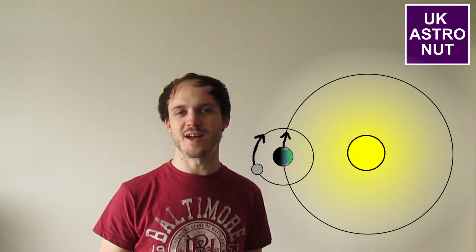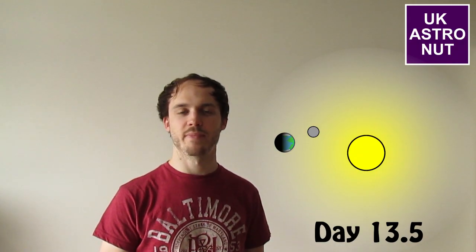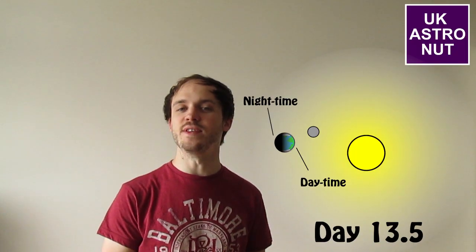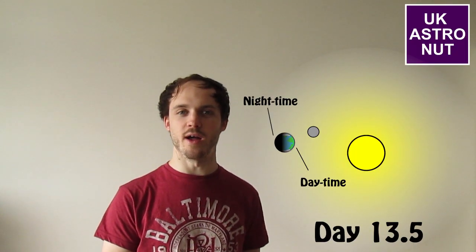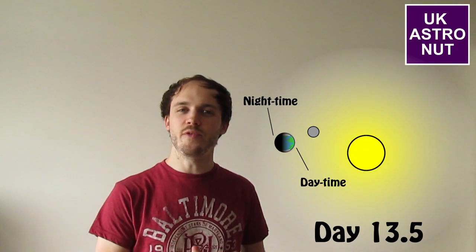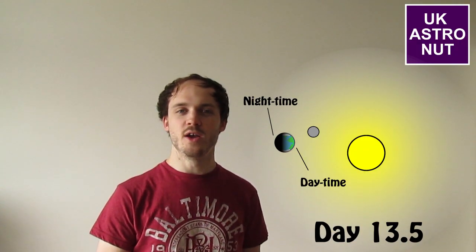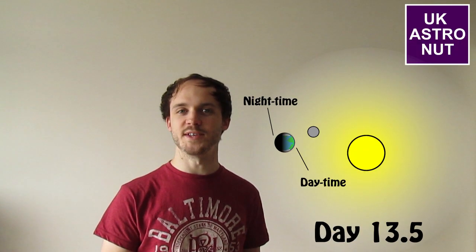If we now travel 13 and a half days forward in time, the Earth has moved a little bit of the way around the sun, and the moon has completed half of its journey to travel around the Earth, meaning it's now on the other side of the Earth from what it was before. So let's look at the situation again: if you're facing towards the sun, you're in the daytime, and if you're facing away from the sun, you're in night time. But as you can see now, if you're in the daytime facing towards the sun, you can also see the moon in the sky as well, because it's in the same direction as the sun.